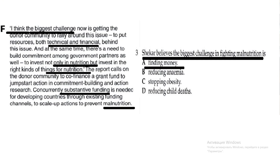For the third question: 'Shakar believes the biggest challenge in fighting malnutrition is finding money.' Shakar says: 'I think the biggest challenge now is getting the donor community to rally around this issue — to put resources, both technical and financial, behind these issues.' At the same time, there is a need to build commitment among government partners to invest not only in nutrition but in the right kinds of nutrition interventions. Substantive funding is needed for developing countries through existing funding channels to scale up actions to prevent malnutrition. So the biggest challenge is finding money.